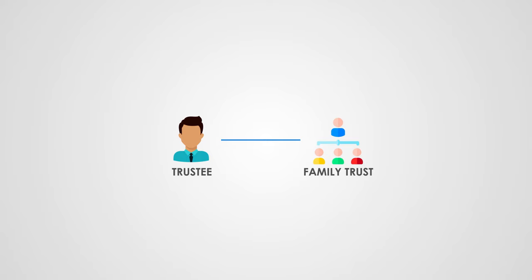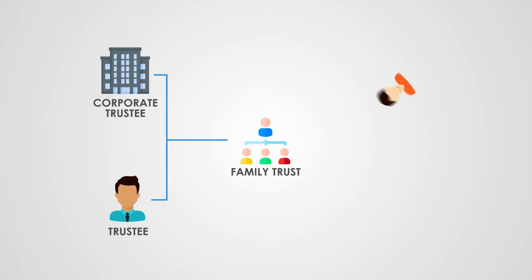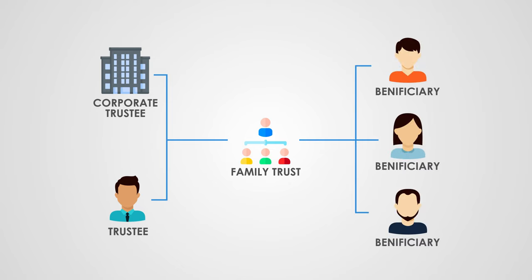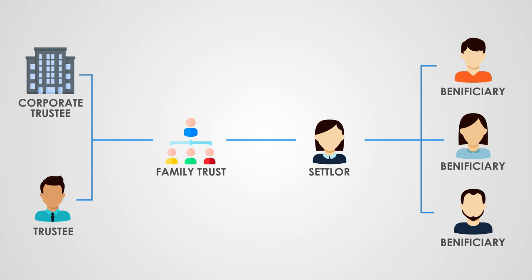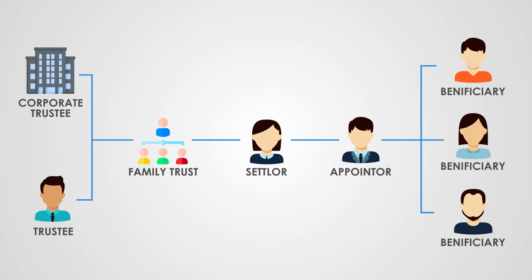If one of these scenarios stands out to you and you're thinking about setting up a family trust, there are a few things you should know about the setup process. There are a few different parties involved. First, you have the trustee, who is the party responsible for making sure that the trust is managed in accordance with the trust deed. The trustee can also be a company. Then you have to appoint the beneficiaries — they won't have any control over the trust but they benefit from it. There is also a settler, who is responsible for initiating the setup of the trust, appointing the trustee and naming the beneficiaries. And lastly, you have an appointer — the person who has the right and power to remove and nominate trustees. This usually happens when a trustee passes away or cannot continue to manage the trust for some reason.